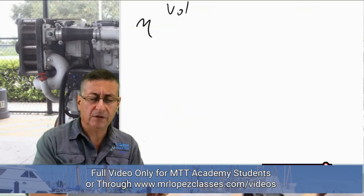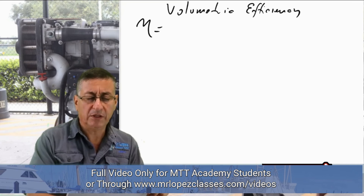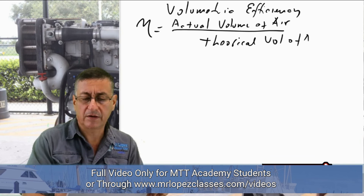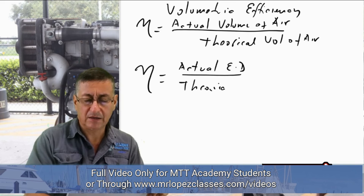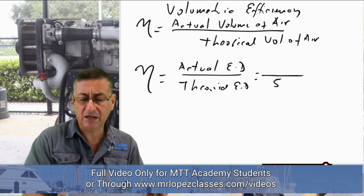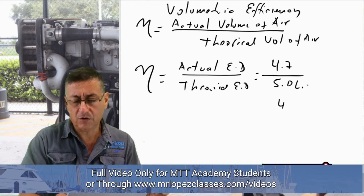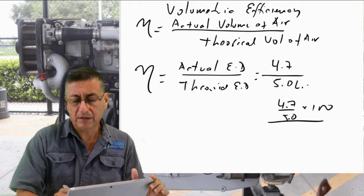Now let's talk about volumetric efficiency. Volumetric efficiency is the actual volume of air divided by the theoretical volume of air — in other words, the real engine displacement divided by the theoretical engine displacement. For example, if the theoretical engine displacement is 5 liters but the actual is only 4.7 liters, then the volumetric efficiency is 4.7 divided by 5, times 100.